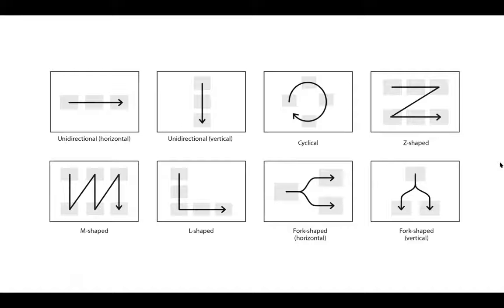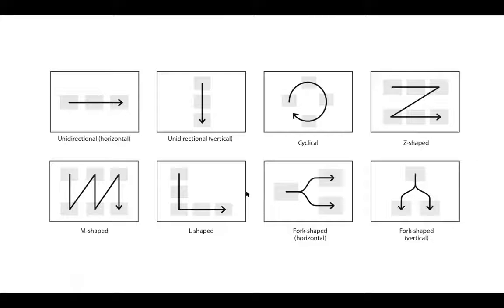The M-shape is nice for posters, the L-shape is less common, and the fork shape is useful when one experiment has two outcomes, a decision tree, or two specific aims. The fork can have more or fewer prongs depending on your story. Keep these compositional layouts in mind as we go through creating these figures together.